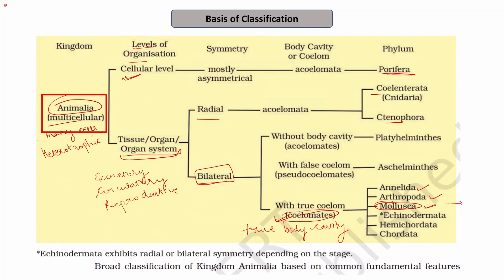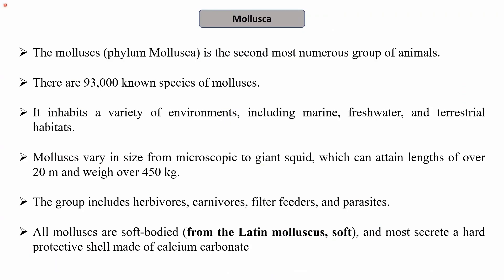Today we focus on organisms in kingdom Animalia that have organ system level of organization, bilateral symmetry, are coelomates, and belong to phylum Mollusca. Mollusca is the second most numerous group of animals — the first being Arthropoda. Approximately 93,000 species of mollusks are known. Like arthropods, they also inhabit a variety of environments: marine water, fresh water, and terrestrial habitats.